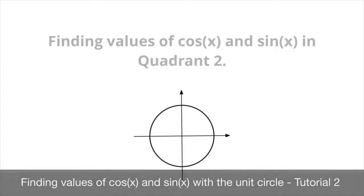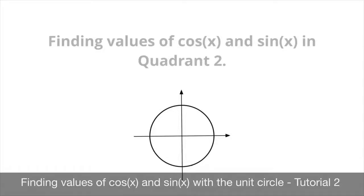We now learn how to find the values of both cosine and sine for angles that lead us to being in the second quadrant with the unit circle. That corresponds to all of the points on the unit circle that I'm currently highlighting. We're going to learn this method with some examples, so let's go right ahead and get started.